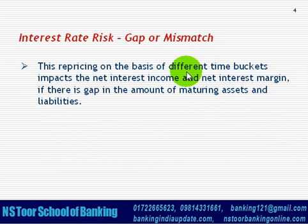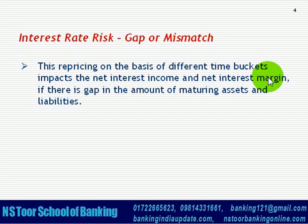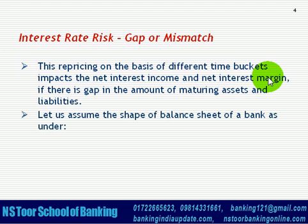This repricing on the basis of different time buckets impacts the Net Interest Income and Net Interest Margin if there is a gap in the amount of maturing assets and maturing liabilities. The amount of assets maturing within a particular period will be different from the amount of liabilities maturing within that period, and there is a gap between the two.